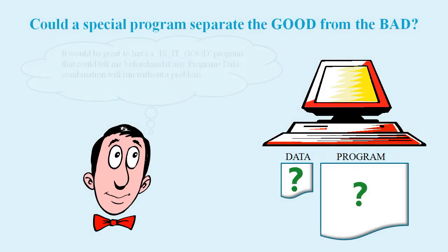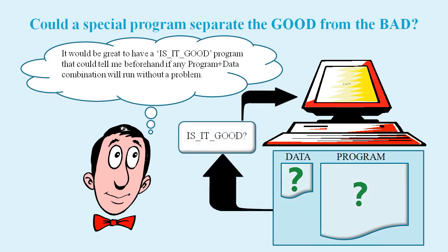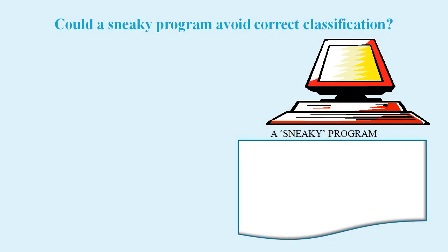We might wonder if it's possible to create an 'is it good' program that could predict if any given program plus its data will run without a problem. But could a sneaky program somehow avoid being categorized correctly?